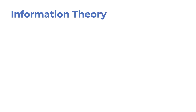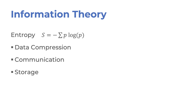Last but not least, information theory also has a big role in many branches of computer science and engineering. Arguably, the most important concept in information theory is the concept of entropy, which measures how much information is present in a signal. The lower the entropy, the more compressible a signal becomes. Information theory is used in data compression, communication, and storage, as well as statistics and machine learning.